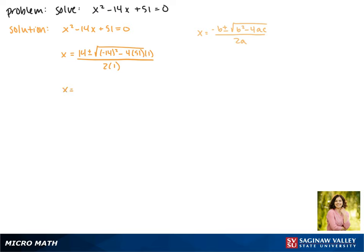Working this out, it gives us x equals 14 plus or minus the square root of 196 minus 204, all divided by 2. 196 minus 204 gives us negative 8, and we can't take the square root of a negative.